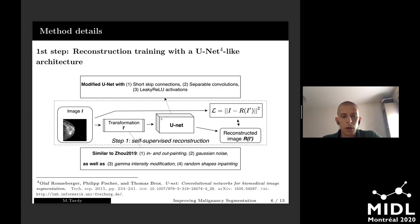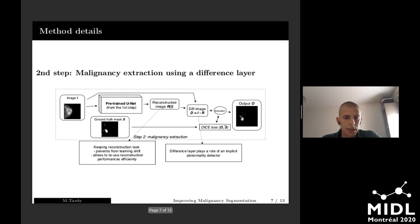We also adjusted our U-Net to deal with higher resolution images. We added short-skip connections and separable convolutions instead of regular ones to reduce the number of weights. We also added leaky ReLU activations because we worked on a smaller dataset compared to others. The whole thing is trained with regular L2 loss, and once it's fully trained, we can switch to the next step.